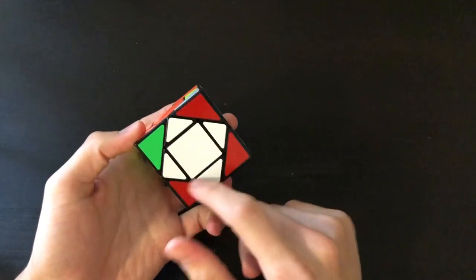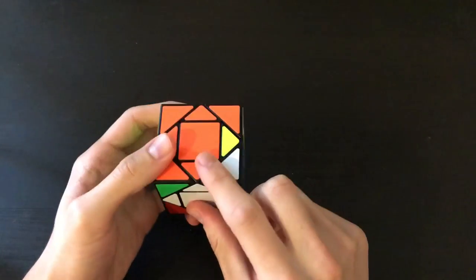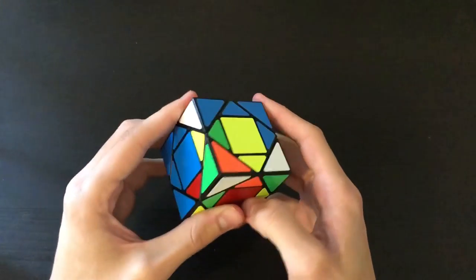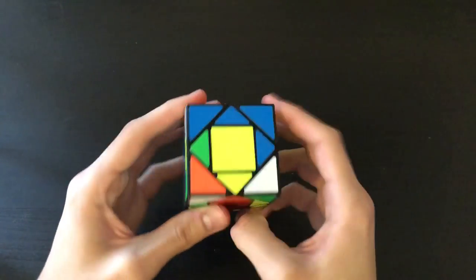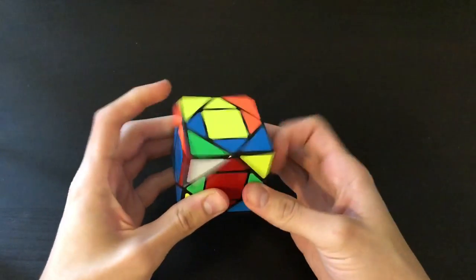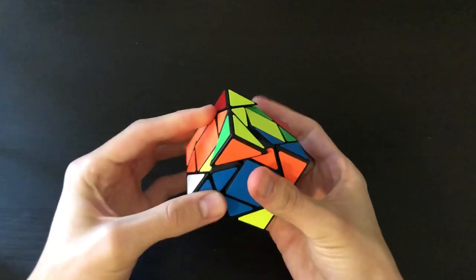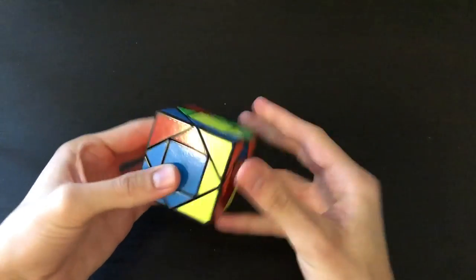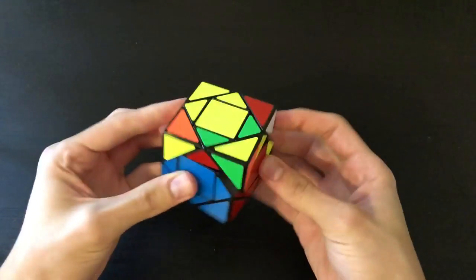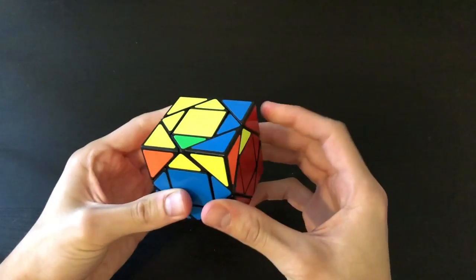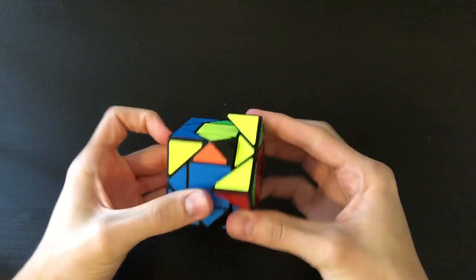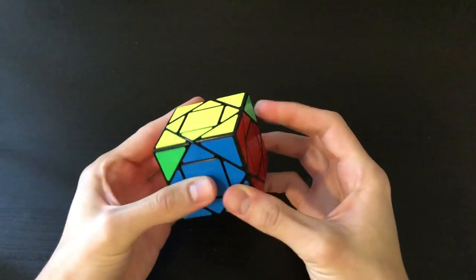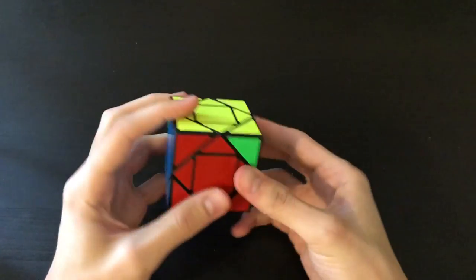You can see it looks kind of like a scube right there. But here we have the cross. So you can see it resembles a normal 3x3 in that matter. Now let's go ahead and do the first F2L pair. And these finger tricks are kind of difficult to do. Alright, and now on to OLL. And then we have PLL.